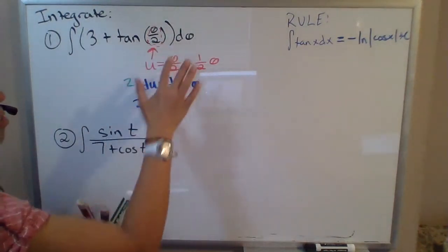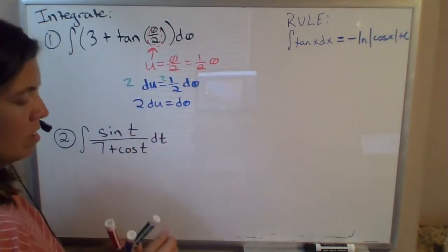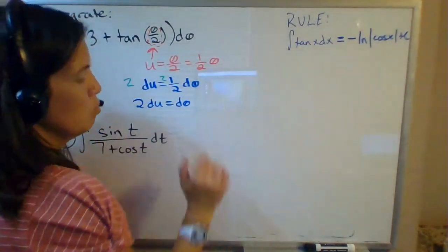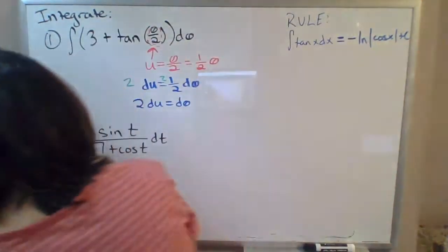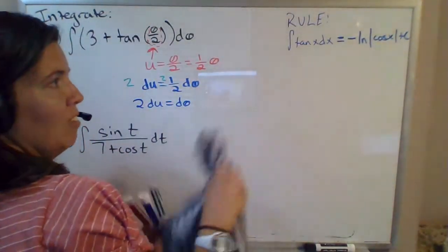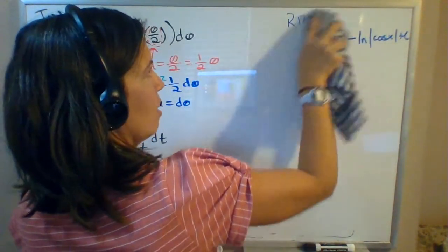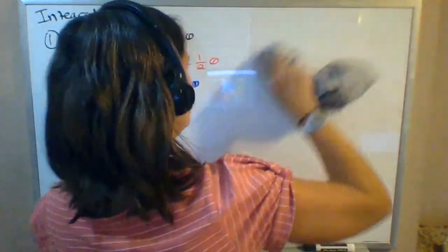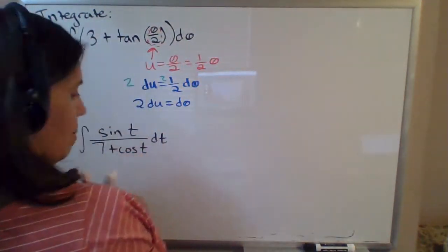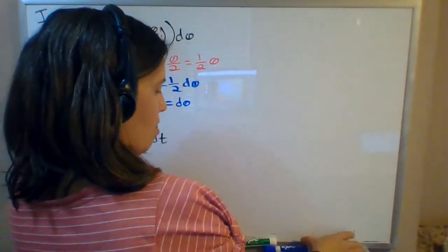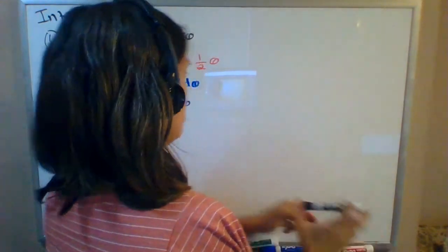So this original integral, I wish I had room to keep this rule here but I don't, so don't forget it when it's time to integrate tangent, don't forget that the antiderivative is negative natural log of cosine. Okay, so now we're ready to integrate this thing.